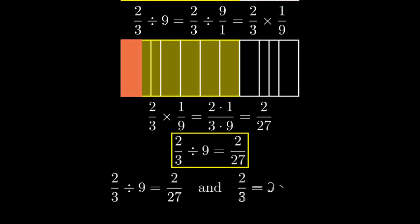To verify this makes sense, remember that when we divide by nine, we're making something nine times smaller. Our answer, two-twenty-sevenths, is indeed nine times smaller than two-thirds.